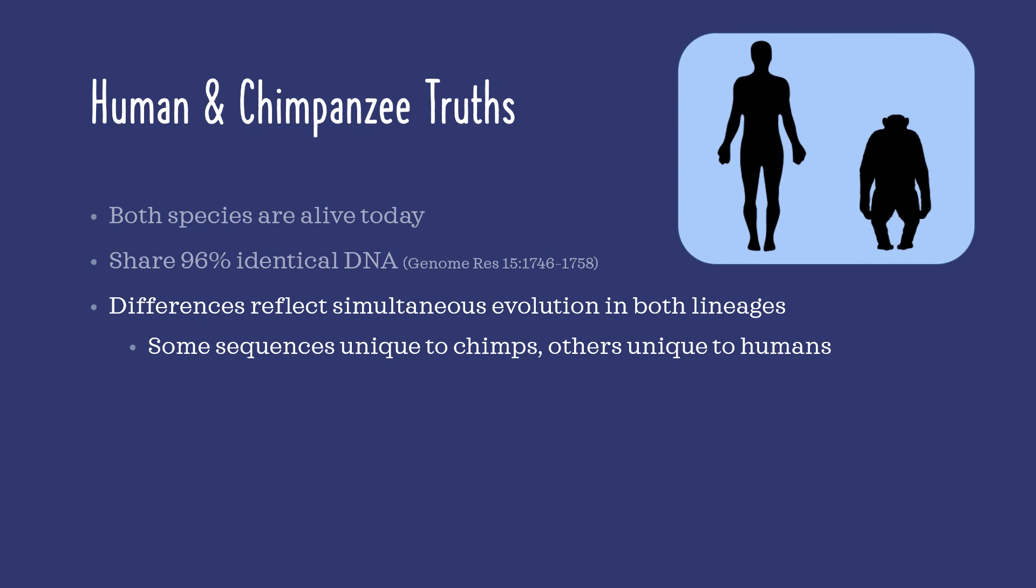So this is another true thing about humans and chimpanzees. The differences in our DNA reflect simultaneous evolution that occurred in both lineages. The genetic differences between our species, comprising just 4% of our DNA, includes sequences that are unique to chimps, as well as sequences that are unique to humans. This means that both lineages simultaneously accumulated unique sequences between when our last common ancestor lived and today.